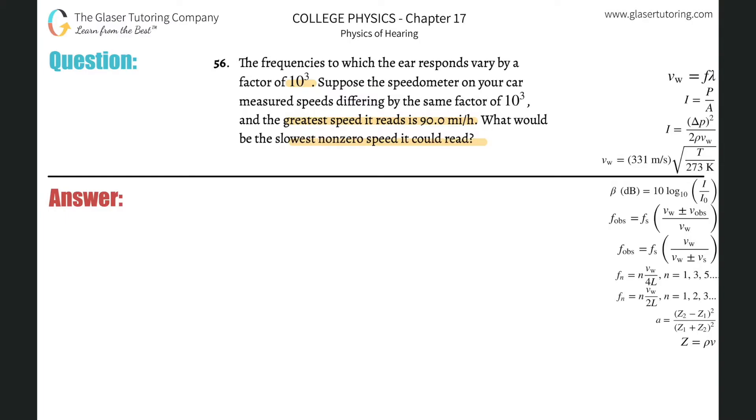Alright, I think what they want here is if it reads 90 miles per hour and it varies by a factor of 10 to the third, basically we're just going to take the 90 miles per hour divided by 10 to the third and we will get our answer.